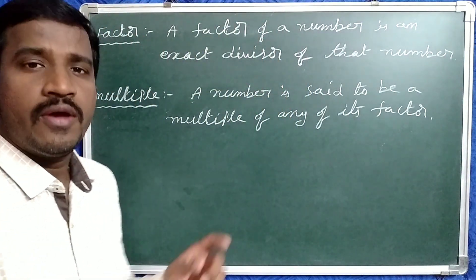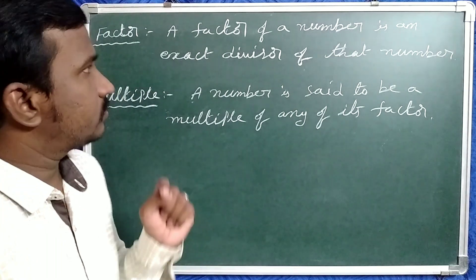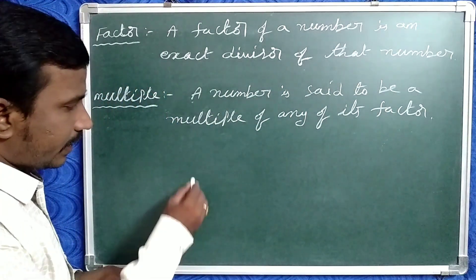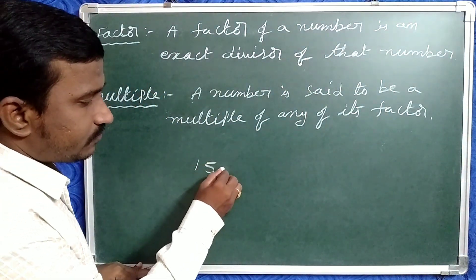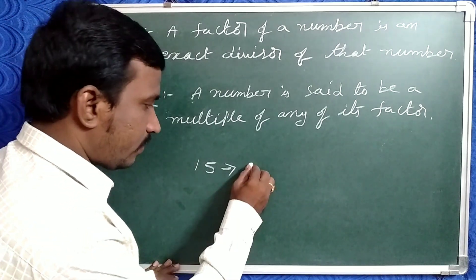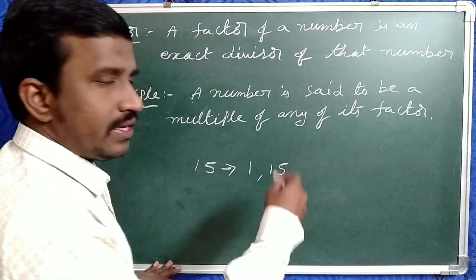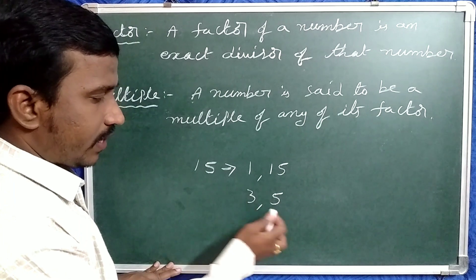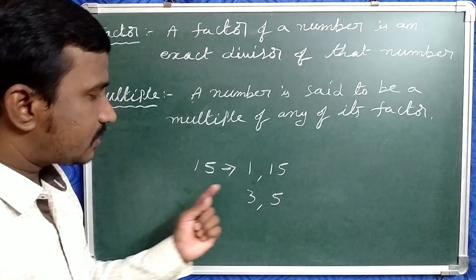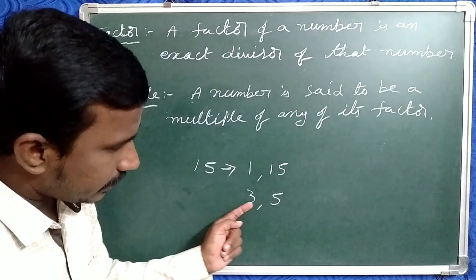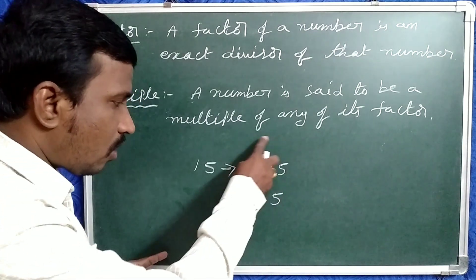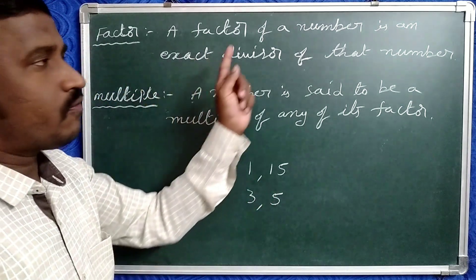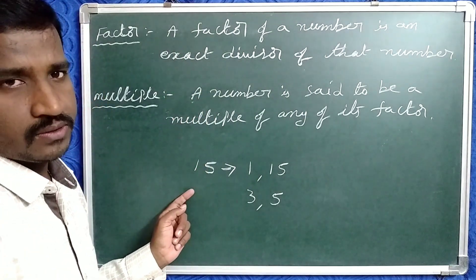First of all, factor. What is meant by factor? A factor of a number is an exact divisor of that number. Suppose take 15. This 15 is exactly divisible by 1 and 15, and also exactly divisible by 3 and 5. Thus 15 is exactly divisible by 1, 3, 5, and 15. That is why these 4 numbers are factors of 15. So a factor of a number is an exact divisor of that number.